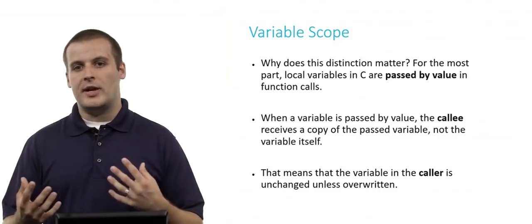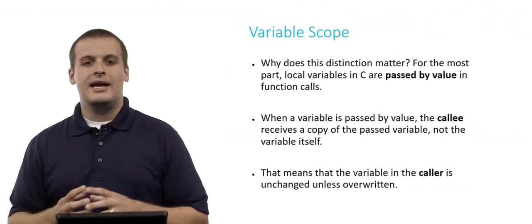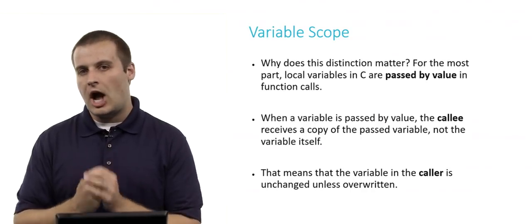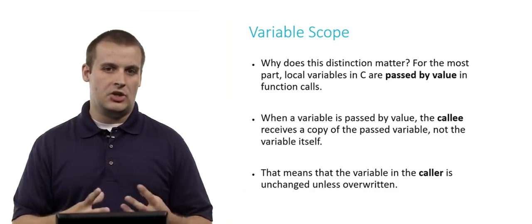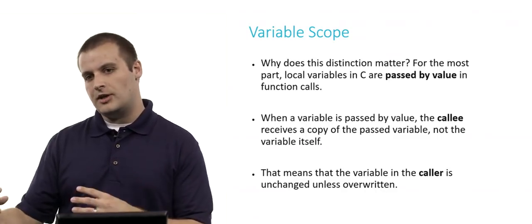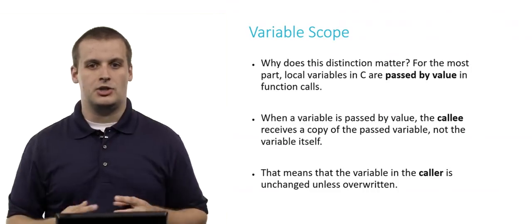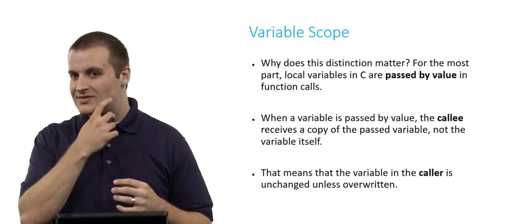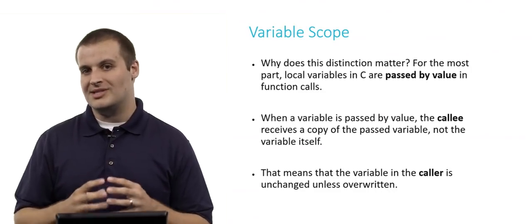Well, when a variable is passed by value, the callee, which is another way of saying the function that is receiving the variable that gets passed in as an input, actually doesn't receive that variable itself. It receives its own copy of it to work with. This is a really important distinction. We just saw a second ago that with global variables, if we manipulate the global variable in one function, its effect carries through to every other function. But with local variables, that's not true. Each function, when it receives variables as input, receives copies of those variables, not the variables themselves.